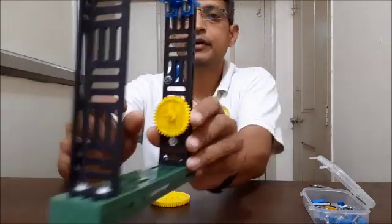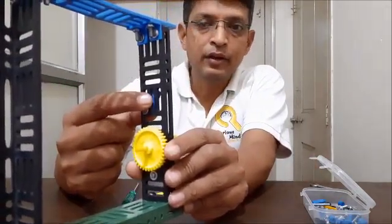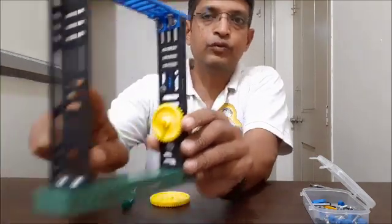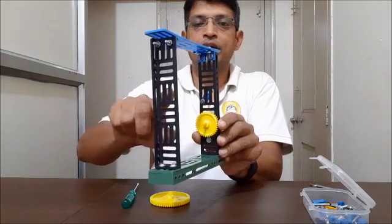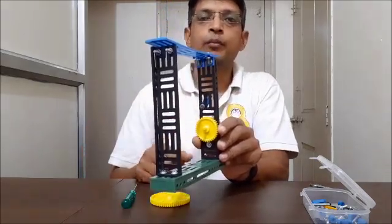We have made one hole to attach the big gear. Now, we'll need to make one more hole exactly opposite to that to attach the shaft which passes through the big gear.